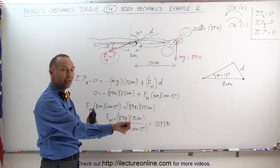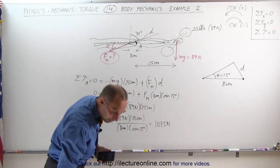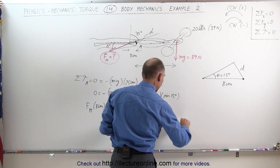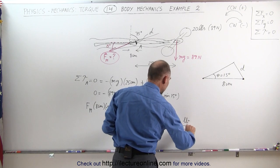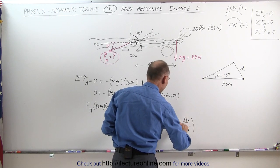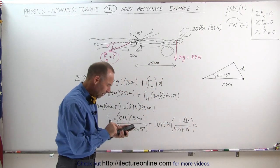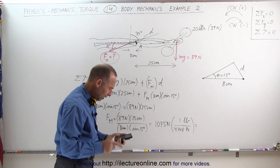Converting that to pounds - one pound is 4.448 newtons - so divide this by 4.448 and we get